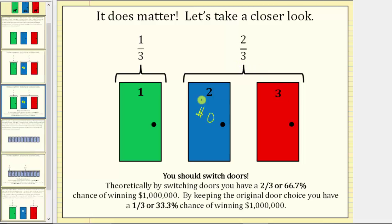Which means you should switch doors. Theoretically, by switching doors you have a two-thirds, or approximately 66.7%, chance of winning one million dollars. By keeping the original door choice, you have a one-third, or approximately 33.3%, chance of winning one million dollars.